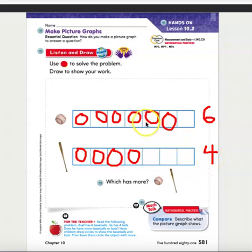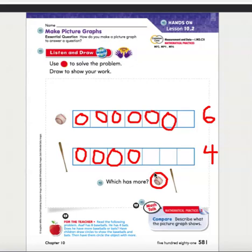How many more? If you count the extras, there are two more — one, two. So there are two more baseballs than baseball bats. We're going to circle baseball. Now remember, in this picture graph it shows there are more baseballs than baseball bats since there are six baseballs and four bats.